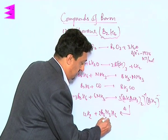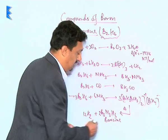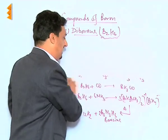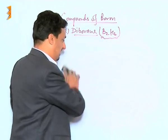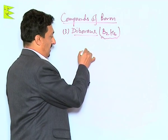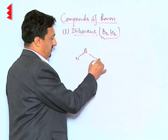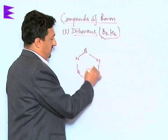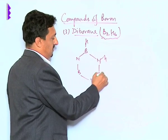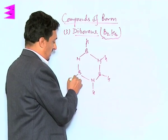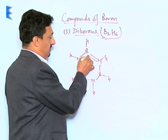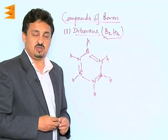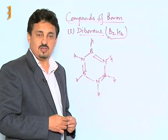Borazine, or inorganic benzene, has a structure very similar to benzene in organic chemistry, having alternate boron-nitrogen bonds. Each of these has one hydrogen, and the nitrogen's lone pair is actually being shared with the boron through a dative bond. This is the structure of borazine or inorganic benzene.